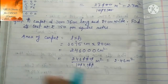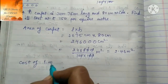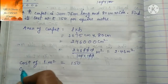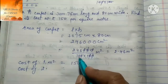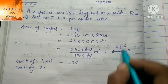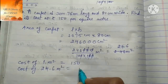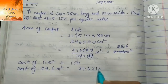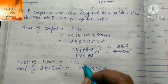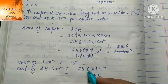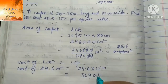Cost निकालनी है। Cost of 1 m² = Rs. 150। Cost of 24.6 m² = 24.6 × 150 = Rs. 3,690।